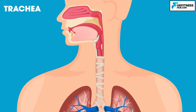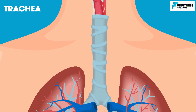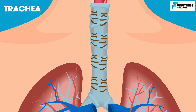The walls of the trachea are strengthened by stiff rings of cartilage to keep it open. The trachea is also lined with cilia, which sweep fluid and foreign particles out of the airway so they stay out of the lungs.